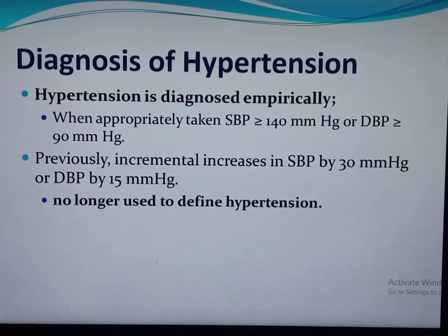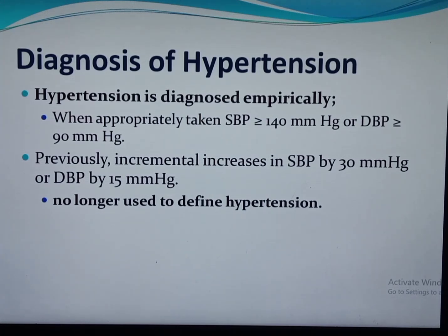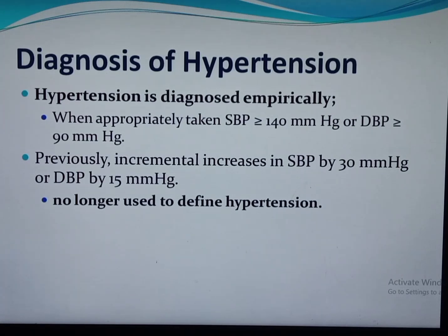Hypertension is diagnosed when appropriately measured systolic blood pressure is greater than or equal to 140 mmHg or diastolic blood pressure greater than or equal to 90 mmHg, on two occasions at least four hours apart but not more than one week apart. A single measurement can be used if the woman previously took antihypertensive medications. This 140/90 cutpoint was used to diagnose hypertension in non-pregnant adults since the 1950s, originally set arbitrarily by insurance companies.